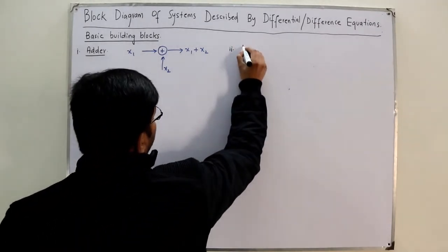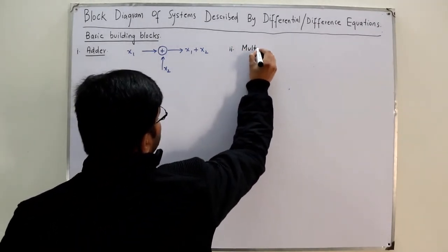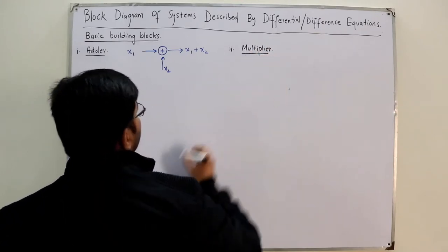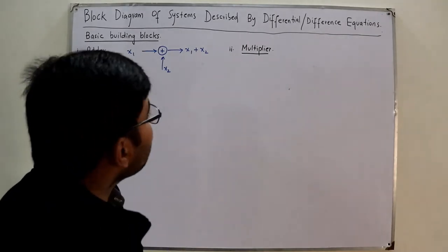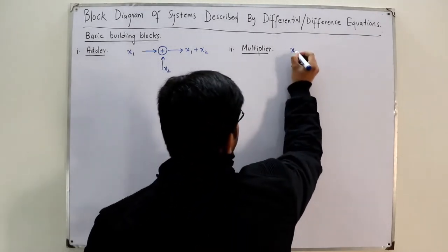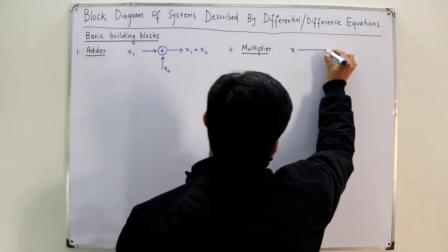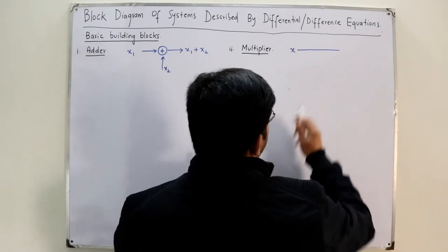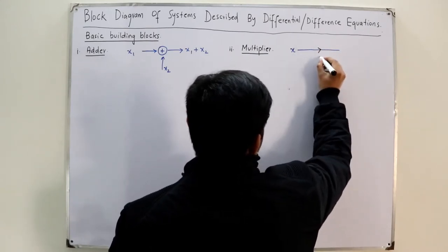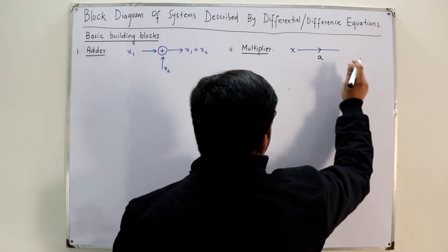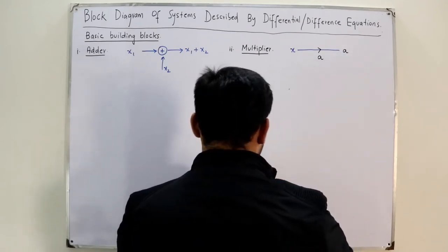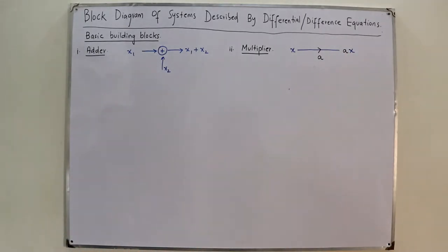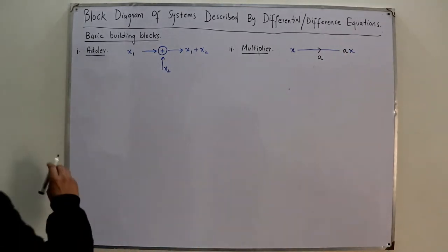The second building block is the multiplier. The multiplier has an input x represented with an arrow, and you multiply by a constant a. So the output is a times the input x, where a is the multiplication factor.